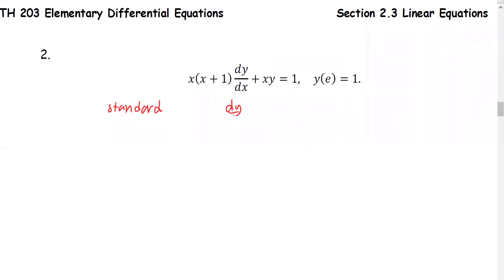So dy/dx plus 1/(x+1) times y equals 1/(x(x+1)), where P(x) is 1/(x+1) and f(x) is 1/(x(x+1)).